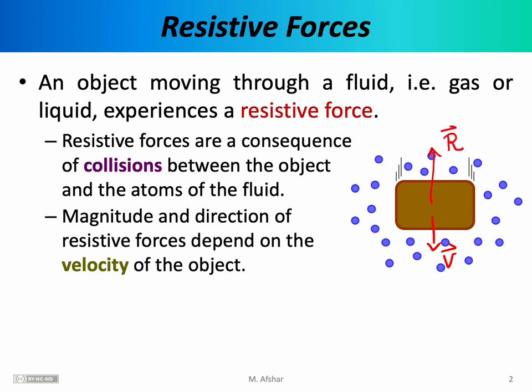In other words, as each one of these molecules collides with the box and ricochets off, it exerts an upward force, and the sum of all those forces gives you this resistive force — which we denote using the letter R — and it will point up.